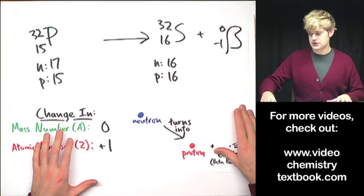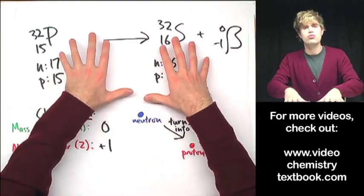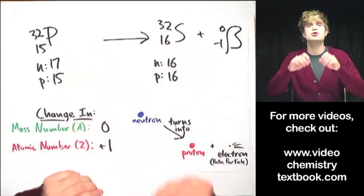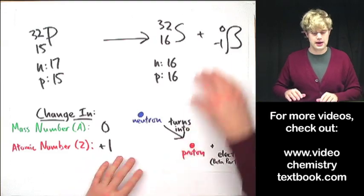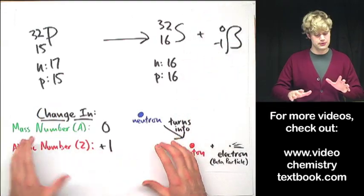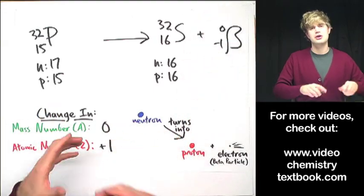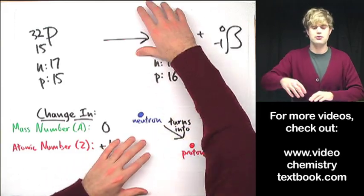Let's use this so that we can solve these problems quicker, instead of having to always calculate the number of neutrons and protons in each atom. So I'll do two more examples, and we'll use this information here as a sort of shortcut to do the problems faster.